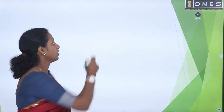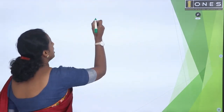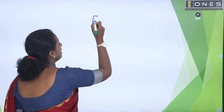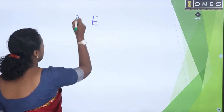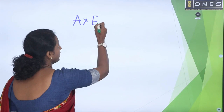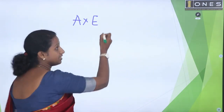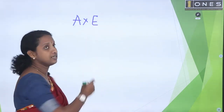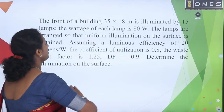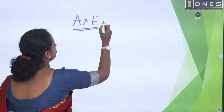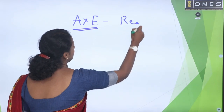Now, luminous flux. Required luminous flux. The equation is: area A and illumination E. So A into E gives the total flux required.